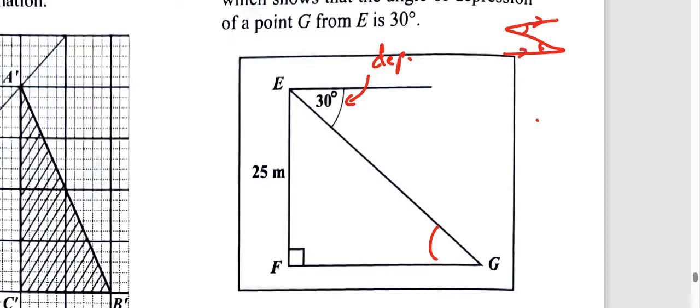This line here is parallel to this one. If I call this P here, that means line EP is parallel to line FG. Once that's the case, the Z formed using those two parallel lines, the angles in between will be equal. So this is actually equal to 30 degrees. Angle of elevation equals angle of depression.